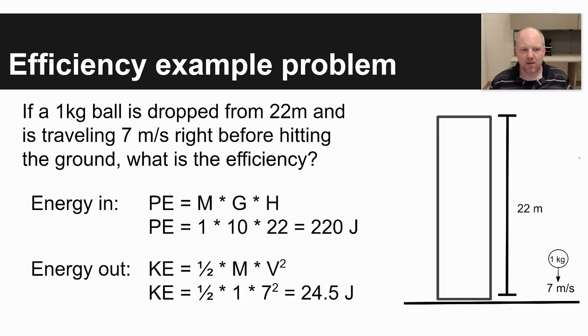What we do is just grab the values that are provided here. If you have trouble calculating potential or kinetic energy, I've made videos explaining how to calculate energy. There are also videos on conservation of energy if you struggle with those concepts. But potential energy, you would take your mass, one, times gravity, I just used 10 times height, 22, to come up with an energy in or beginning energy of 220 joules.